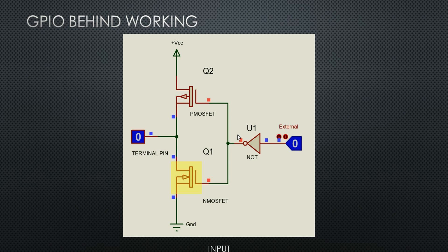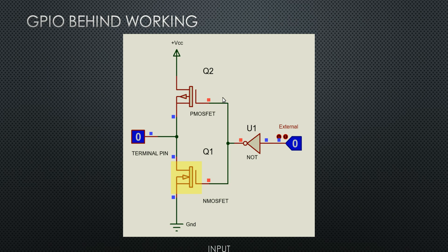In case 1, assume we are giving a value 0 or ground to the GPIO pin. While passing through the NORD gate this signal will be inverted and we will be getting a high signal or maximum VCC voltage. The key difference between P-MOSFET and N-MOSFET is: when we give a high signal to the gate of the P-MOSFET it will be inactive, and when we give a low signal the P-MOSFET will be activated. Conversely, a high signal activates the N-MOSFET and a low signal keeps it inactive.